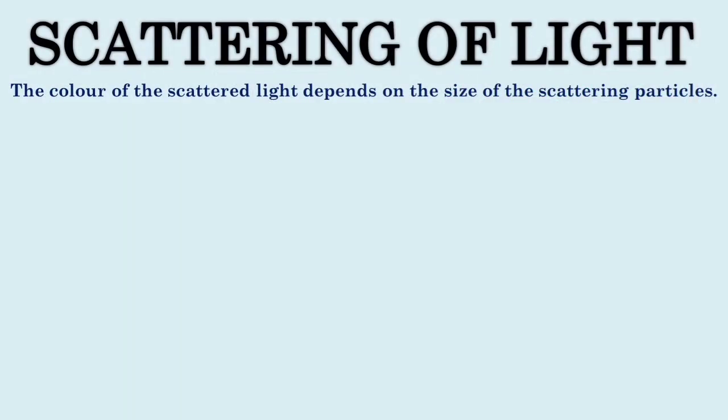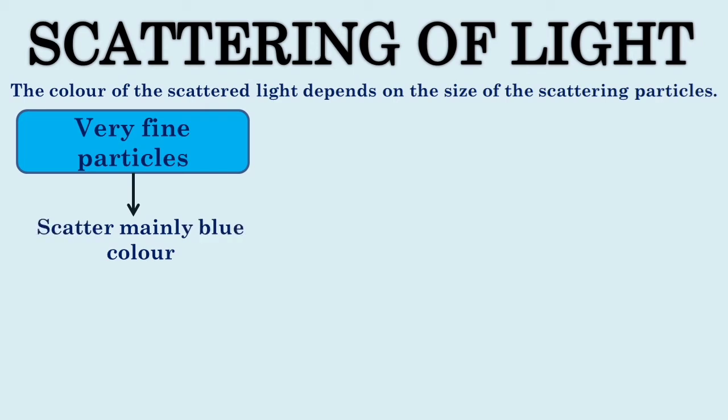In fact, blue light present in sunlight is scattered 10 times more than the red light. This shows that the color of the scattered light depends on the size of the scattering particles.